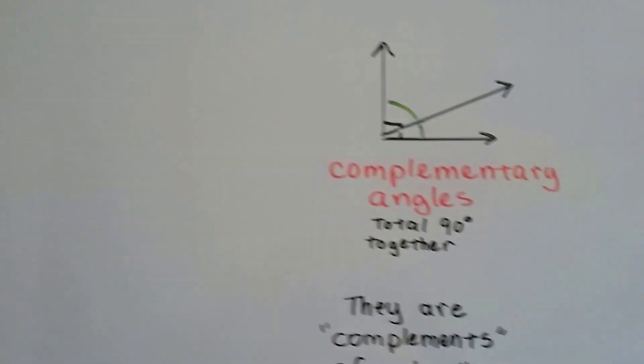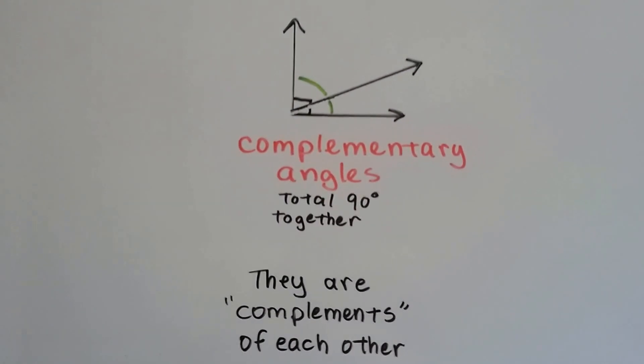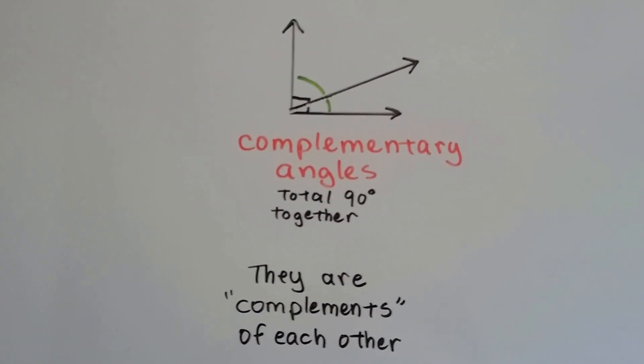In the last couple of videos we've talked about complementary angles and how they total 90 degrees together. They're complements of each other.